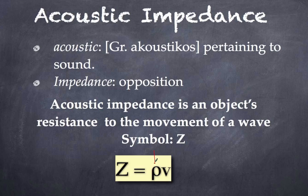Z is a combination of two variables. The first variable refers to the density of the material, ρ. The second value refers to the velocity of the material, v. Acoustic impedance is the multiplication of density and velocity.